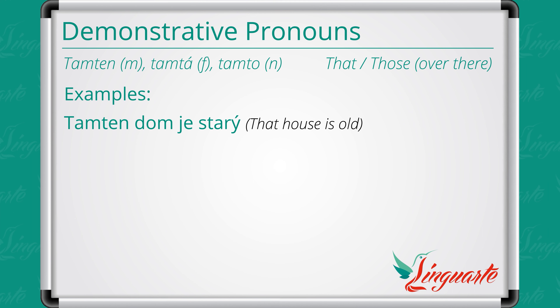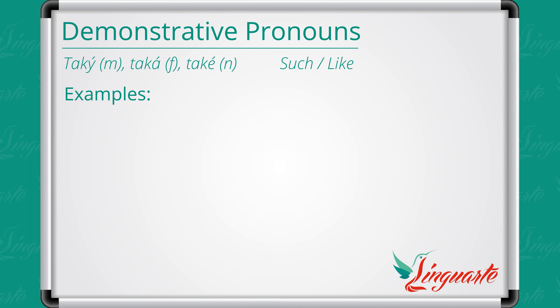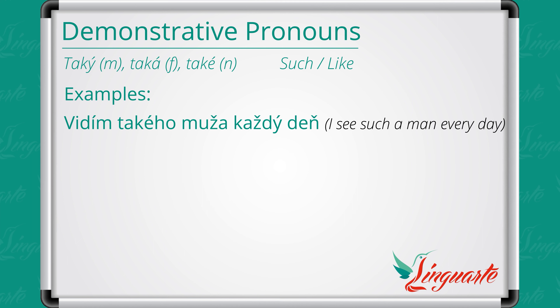There is a fourth type of demonstrative pronouns, used to refer to objects or people of a certain kind or type. These pronouns correspond to the English 'such' or 'like.' In Slovak they are: Taký — masculine, Taká — feminine, Také — neutral. Examples: Vídim takého muža každý deň. — I see such a man every day. Mám takú knihu doma. — I have a book like that at home. Potrebujem také auto. — I need a car like that. These are the forms according to gender and number.